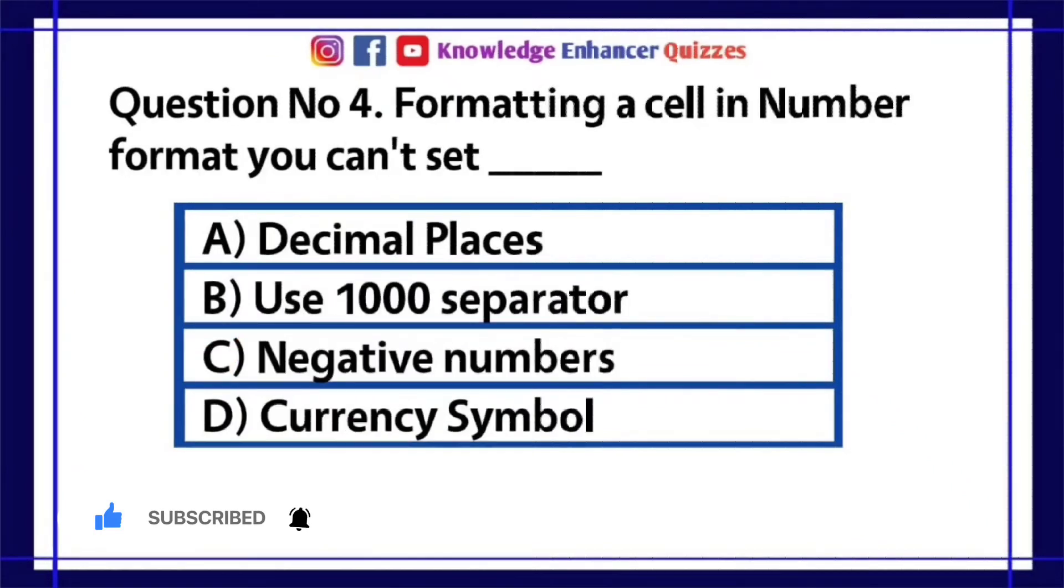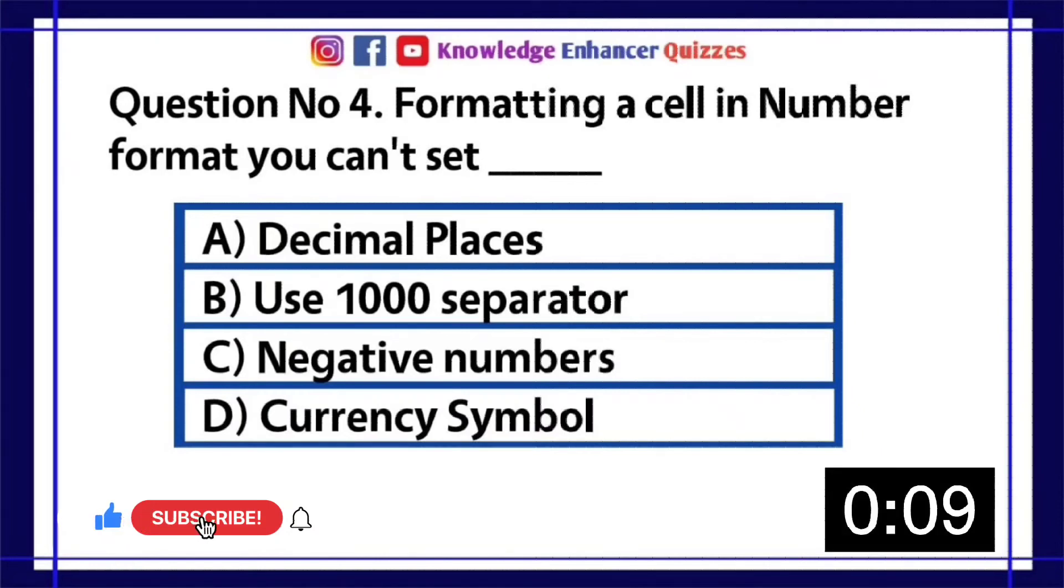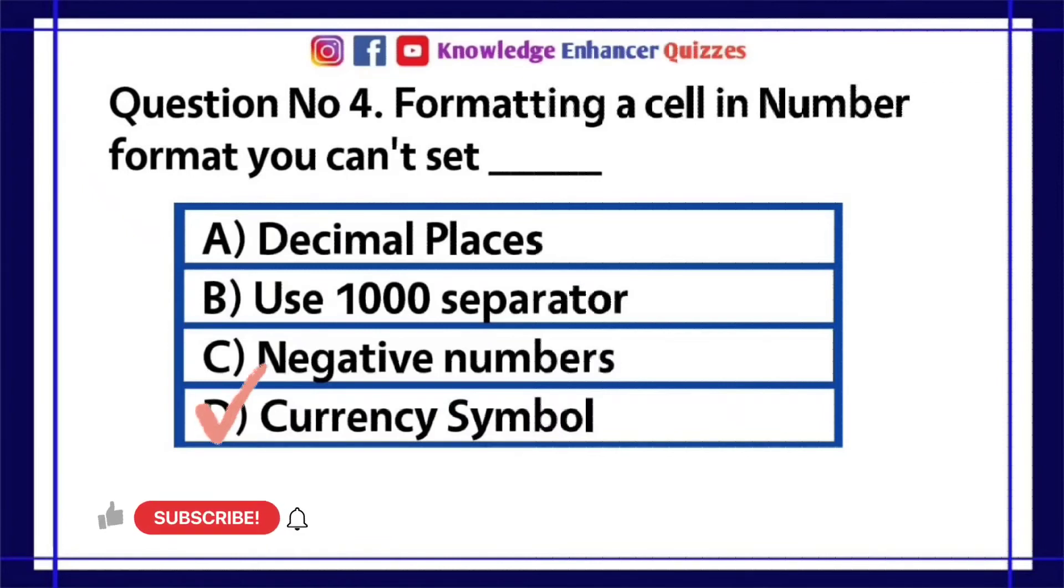Question number 4. Formatting a cell in number format, you can't set: A. Decimal places. B. Use 1000 separator. C. Negative numbers. D. Currency symbol. Option D is the right answer.